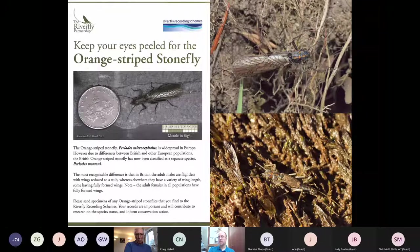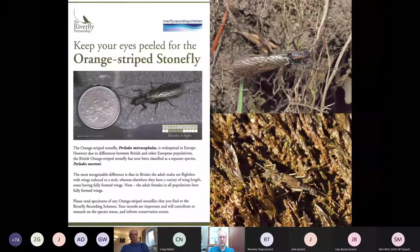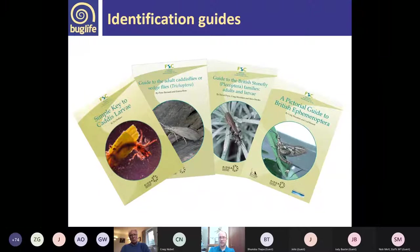We also looked for the orange-striped stonefly, an endemic UK species, to determine whether all UK specimens belong to the same species. We've discussed the pictorial guide to mayflies, but there are also guides to stoneflies and caddisflies available — all presented in a simple, accessible way and very affordable.